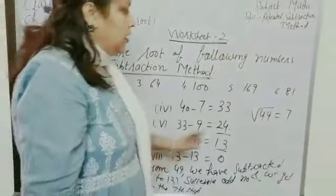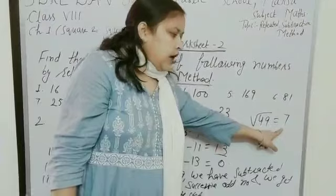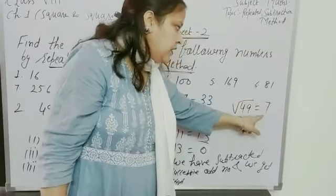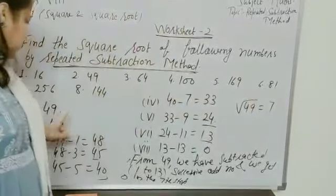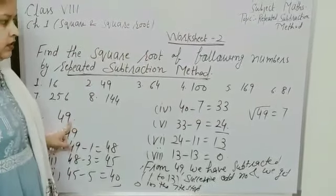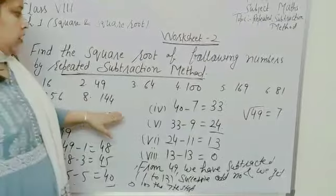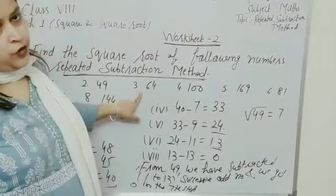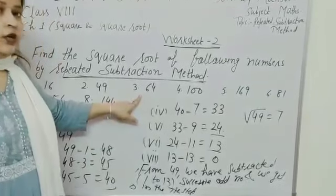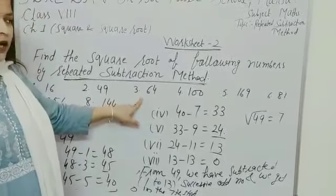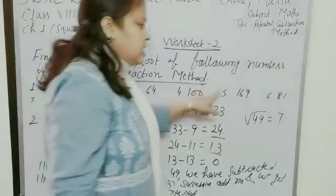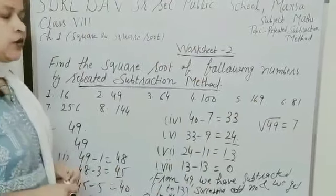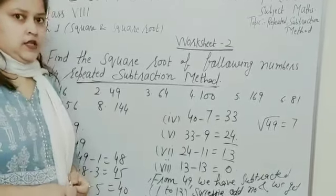If we want to check our answer is right or wrong, then we have to do the square of this number 7. Square of 7 will be 49. Now, the rest of the parts you have to do yourself. I think you will get no difficulty in solving the rest of the parts if you have listened to my video with full concentration. Thanks and have a nice day.